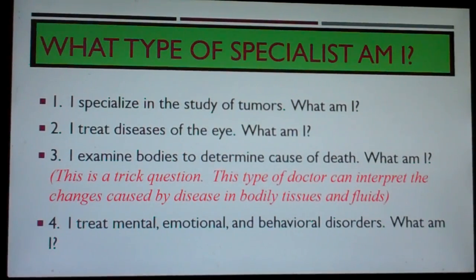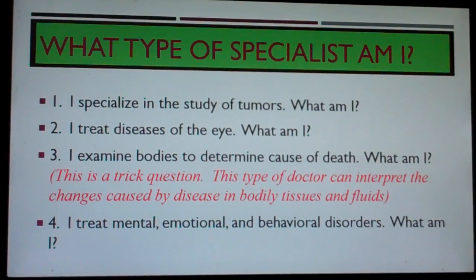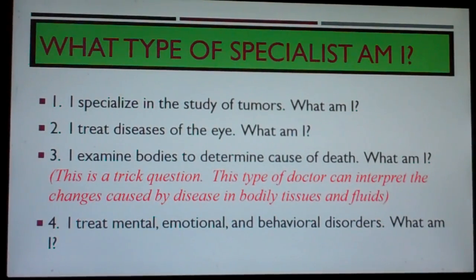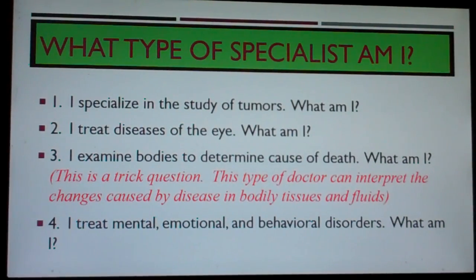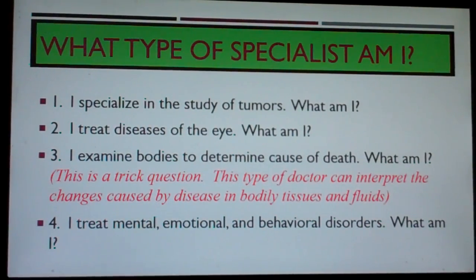What type of specialist am I? Number one: I specialize in the study of tumors. What am I? Number two: I treat diseases of the eye. What am I? Number three: I examine bodies to determine cause of death. What am I? This is a trick question — this type of doctor can also interpret the changes caused by disease in bodily tissues and fluids.